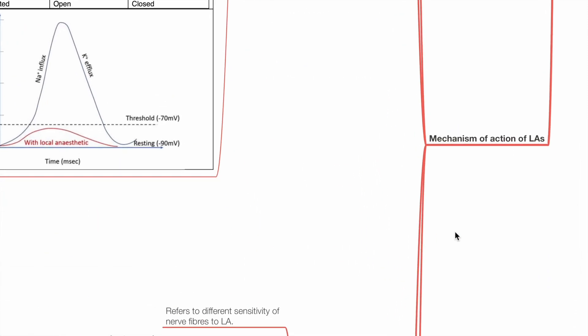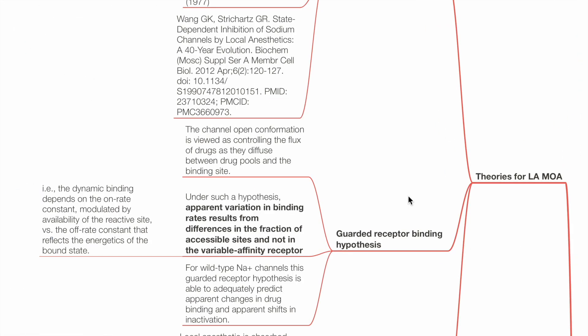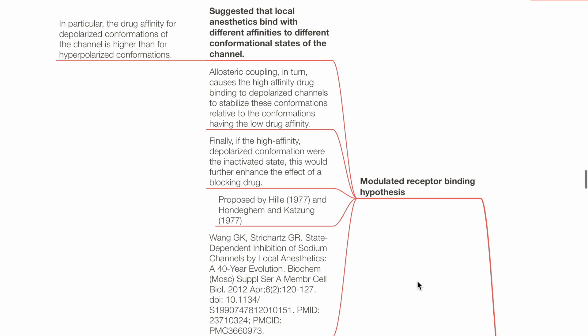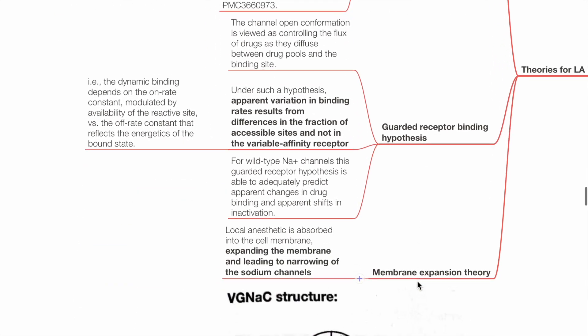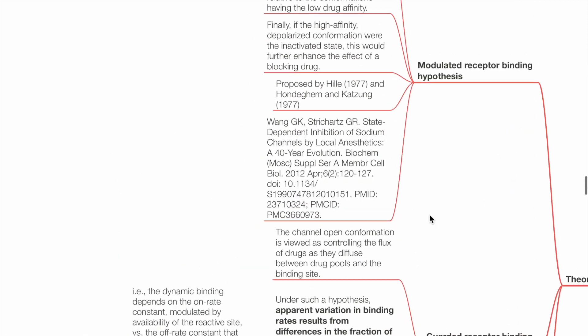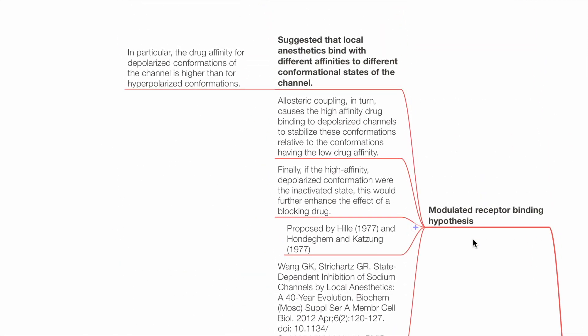Mechanism of action of local anaesthetics. Theories include the modulated receptor binding hypothesis, guarded receptor binding hypothesis, and membrane expansion theory. The modulated receptor binding hypothesis suggests that LA binds with different affinities to different conformational states of the ion channel. The drug affinity for depolarized conformations of the channel is higher than that for hyperpolarized conformations. Allosteric coupling causes high affinity of drug binding to depolarized channels to stabilize these conformations relative to conformations having low drug affinity.